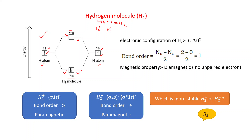The electronic configuration of H₂ is sigma 1s². Bond order is calculated as (Nb − Na) / 2, where Nb is the number of electrons in bonding molecular orbitals and Na in anti-bonding. There are 2 electrons in bonding and 0 in anti-bonding, so bond order = (2 − 0) / 2 = 1.